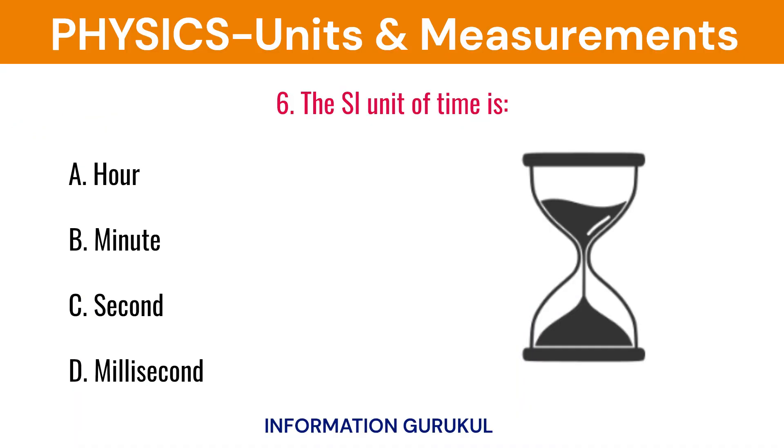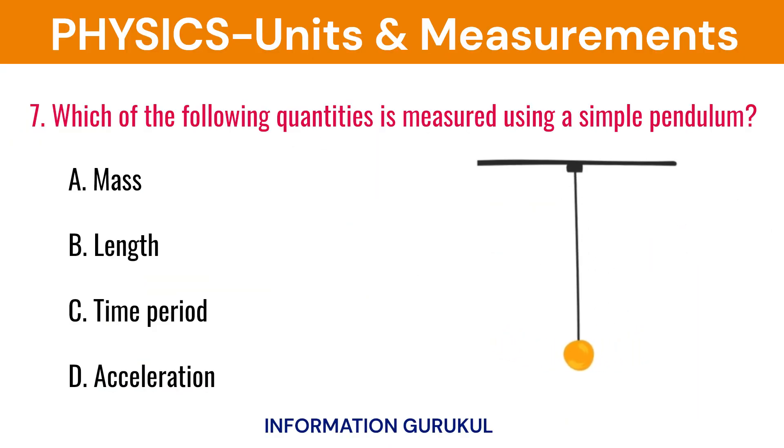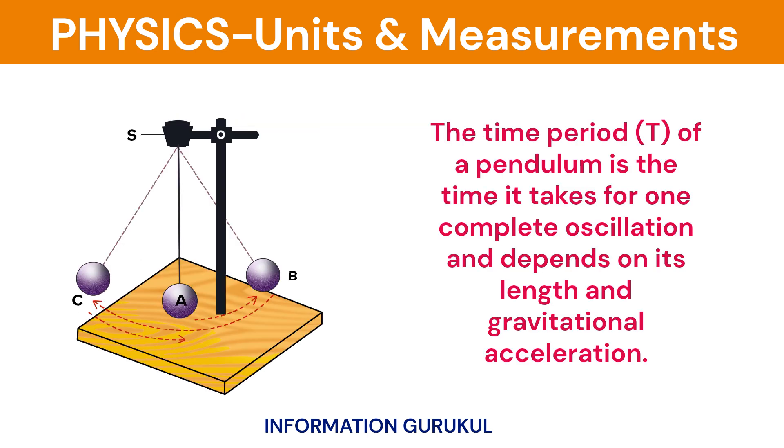The SI unit of time is second. Which of the following quantities is measured using a simple pendulum? Time period. The time period of a pendulum is the time it takes for one complete oscillation and depends on its length and gravitational acceleration.